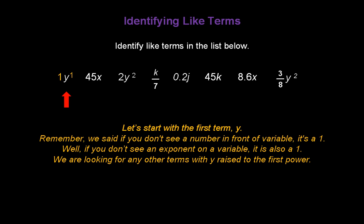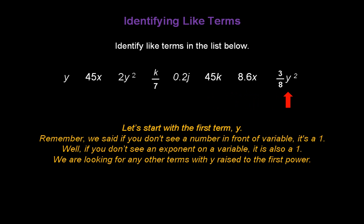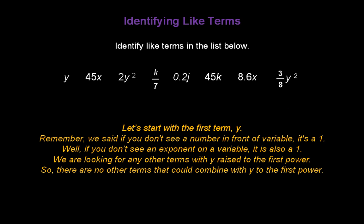We're looking for any other terms in this list with y raised to the first power. The next term is an x, so that won't work. The next term is y, but it's raised to the second power, so it's not a like term either. Then there's a k, a j, another k term, an x term, and another y term — but again raised to the second power. So there are no other terms in this list that could combine with y to the first power.